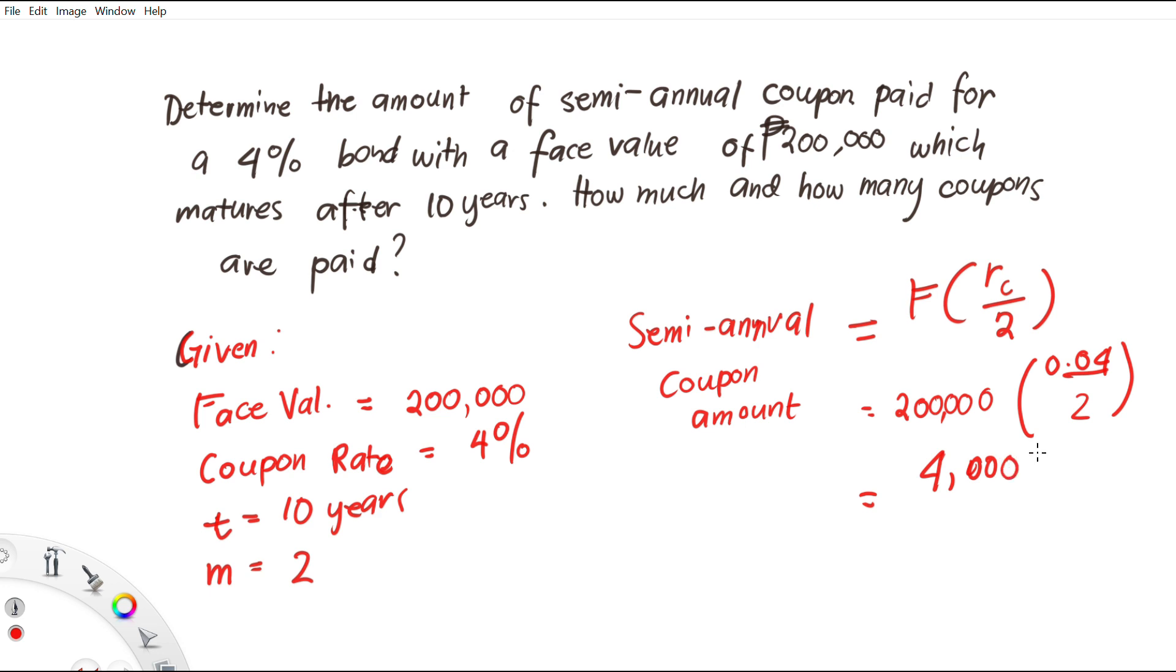So the answer for how much is 4,000. We have 10 years, so we have 20 payments. Thus, each semi-annual coupon is 4,000 pesos paid 20 times every six months.